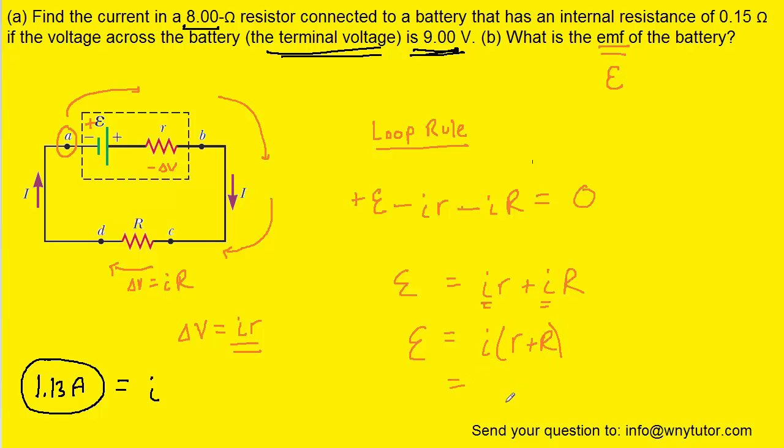The current we had found earlier, it was 1.13 amps. The lowercase r is the internal resistance, which is 0.15 ohms. And then the uppercase R was the 8 ohms. And when you plug this into your calculator,